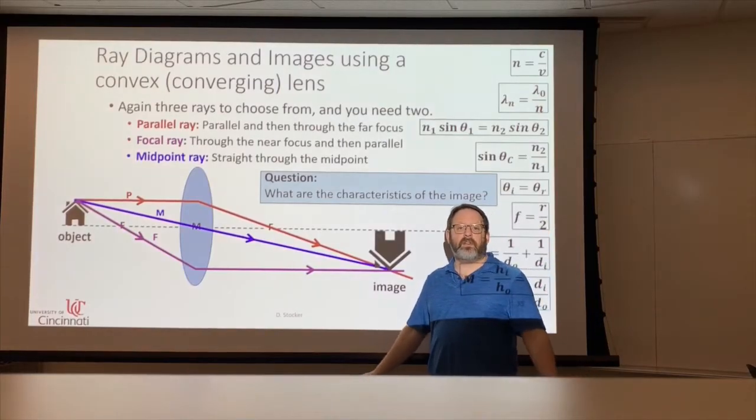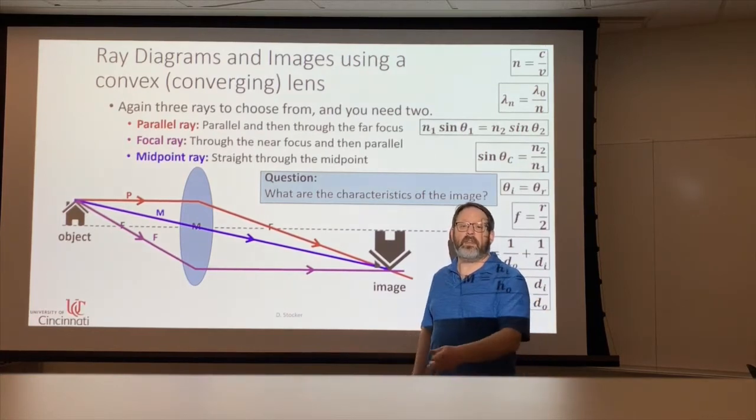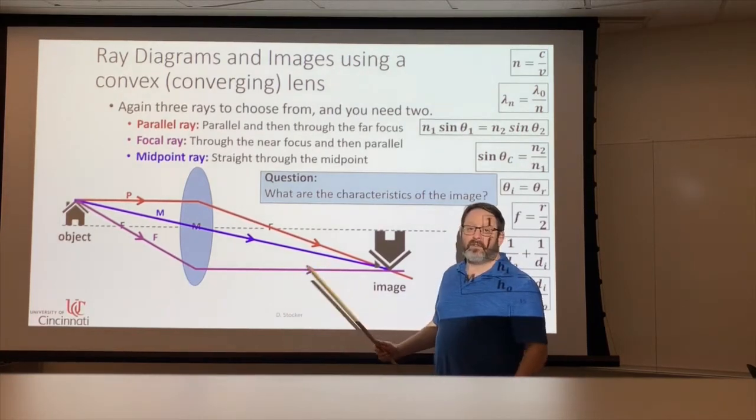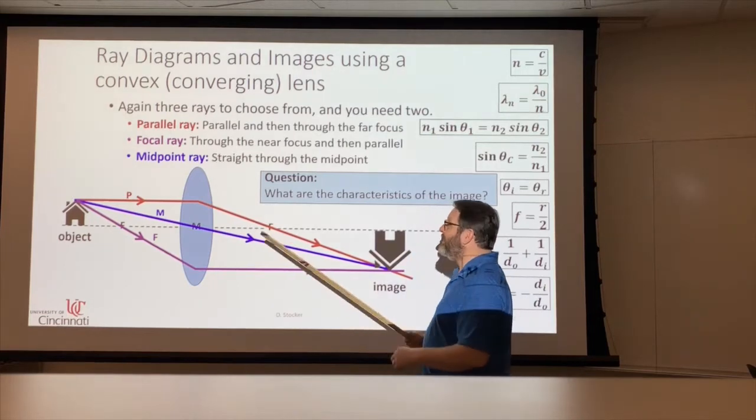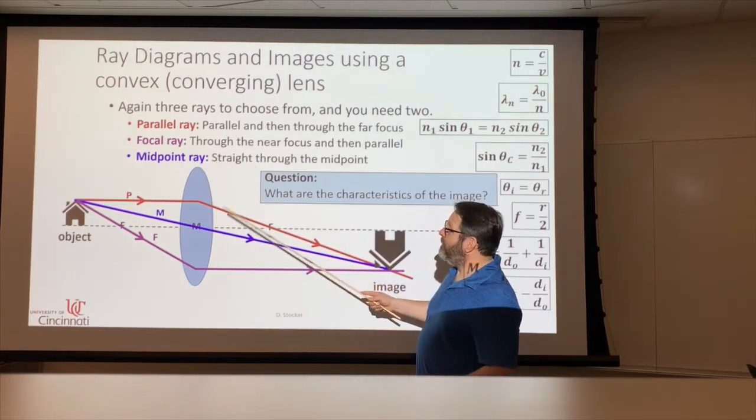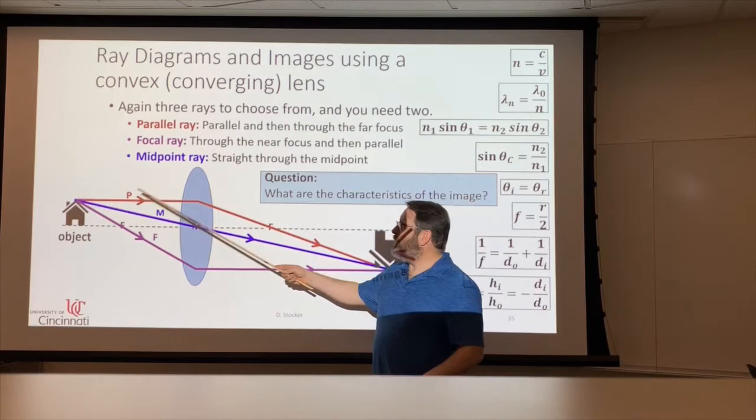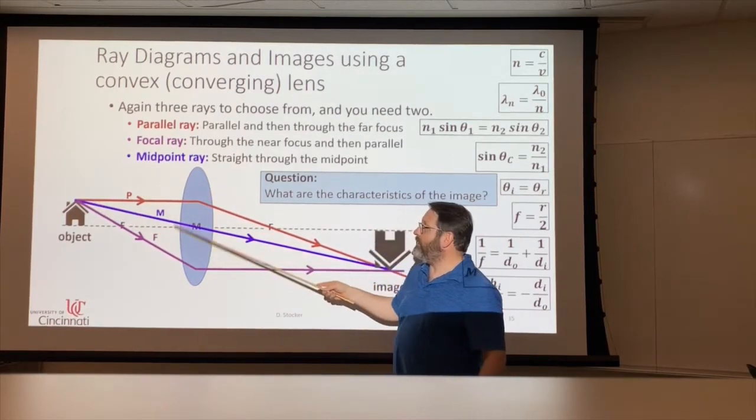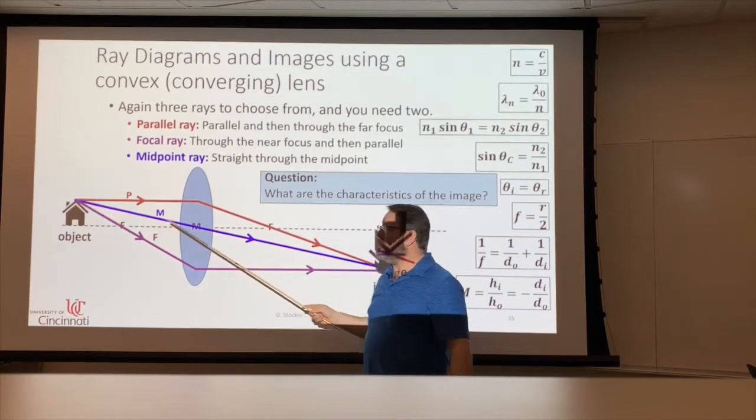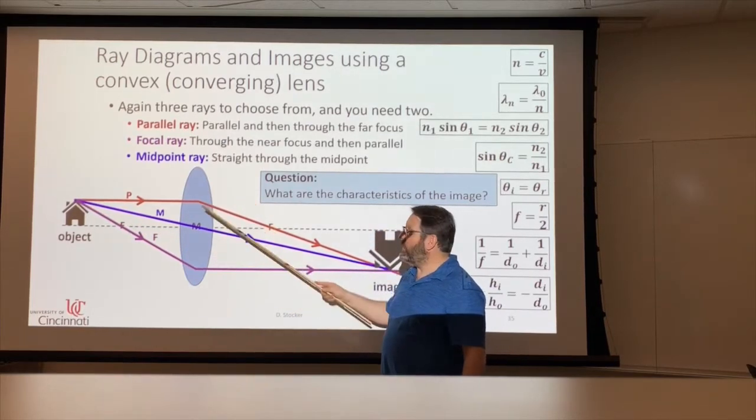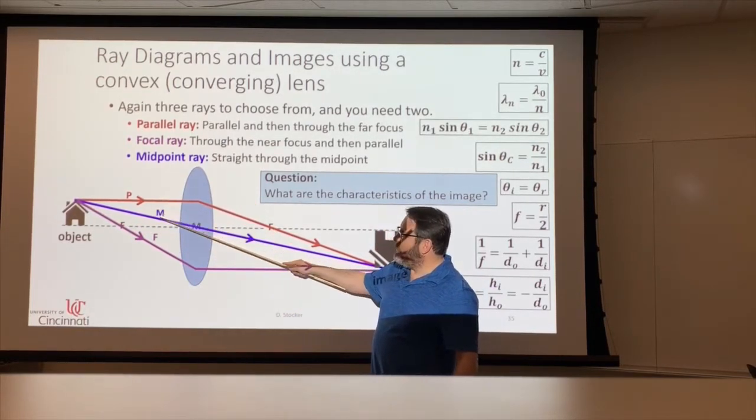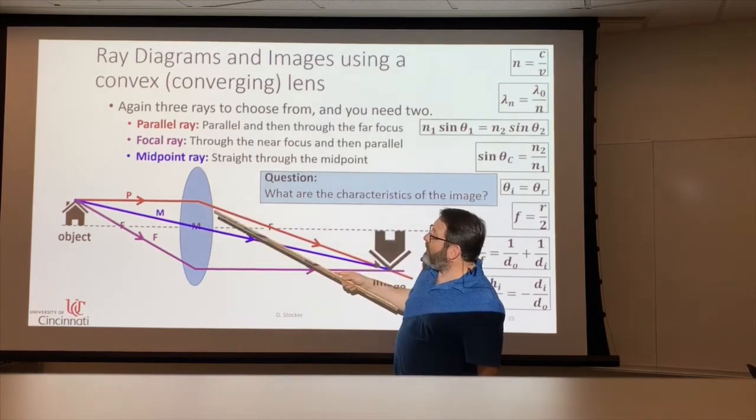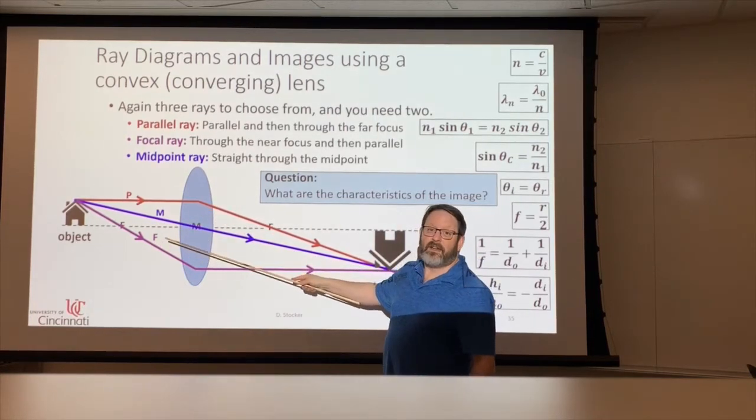So now we're going to look at a ray diagram and forming an image with a lens. It works exactly the same way as it did with the mirror. Same basic ideas. So we've got, again, there are multiple different paths that the light takes. It travels in every direction out from the object to get through the lens. But we only need to find two of the three principal rays to choose from to find out where the image is.